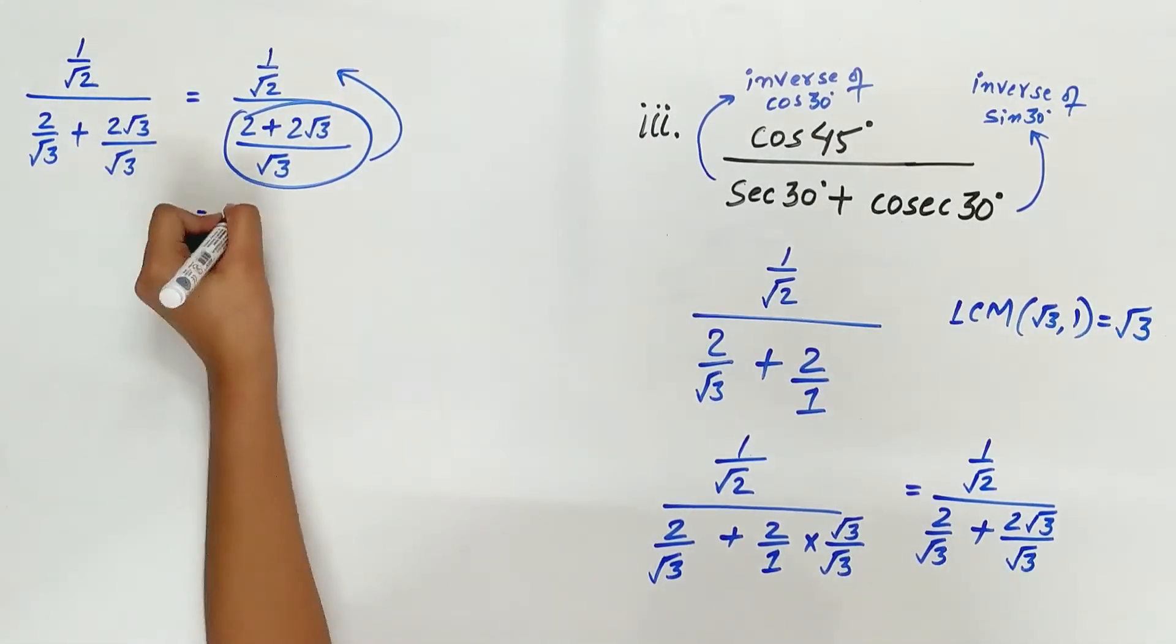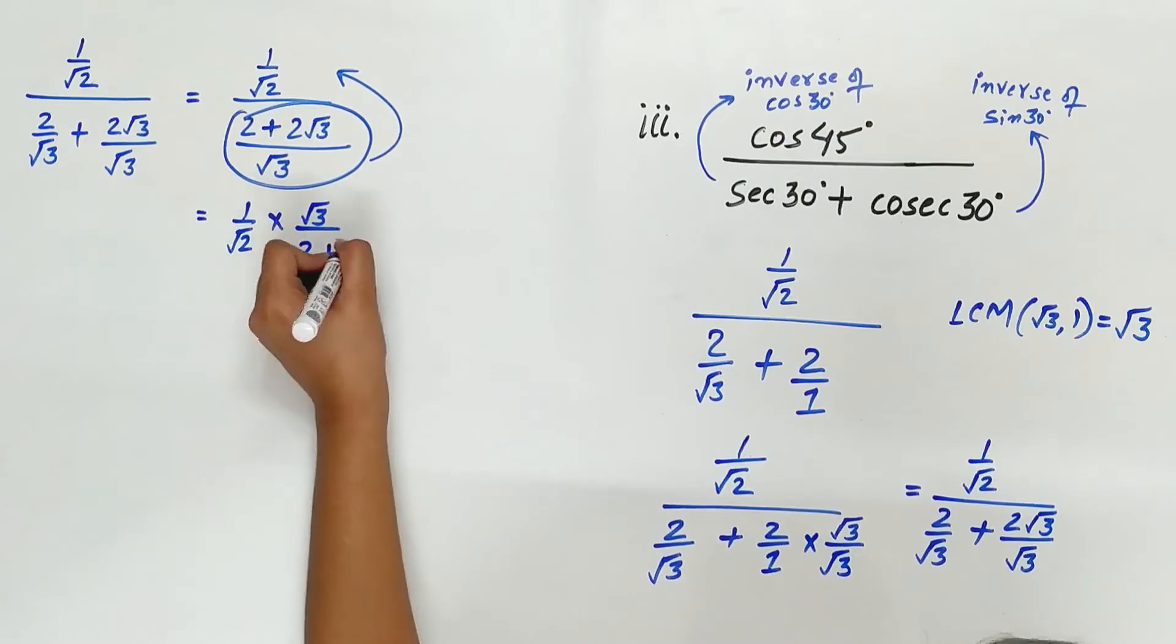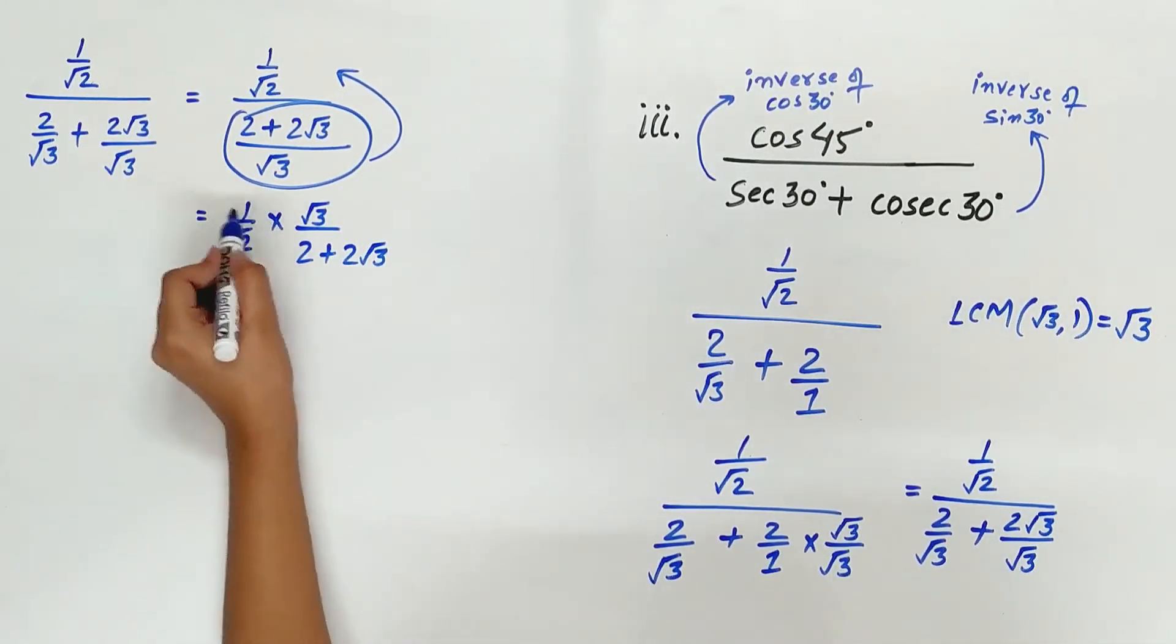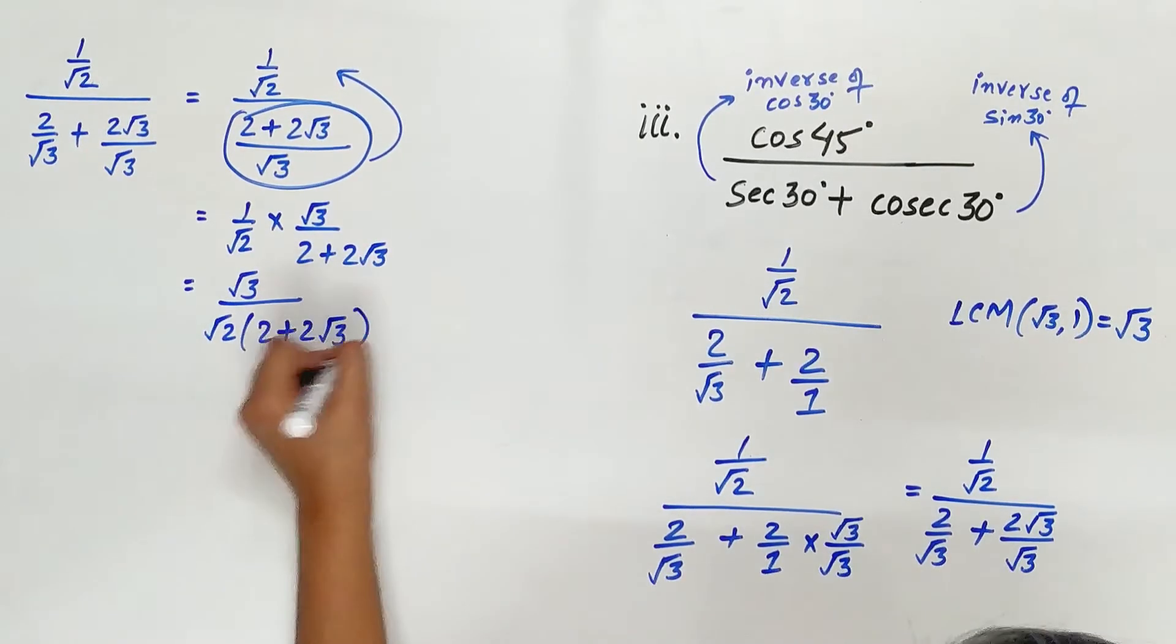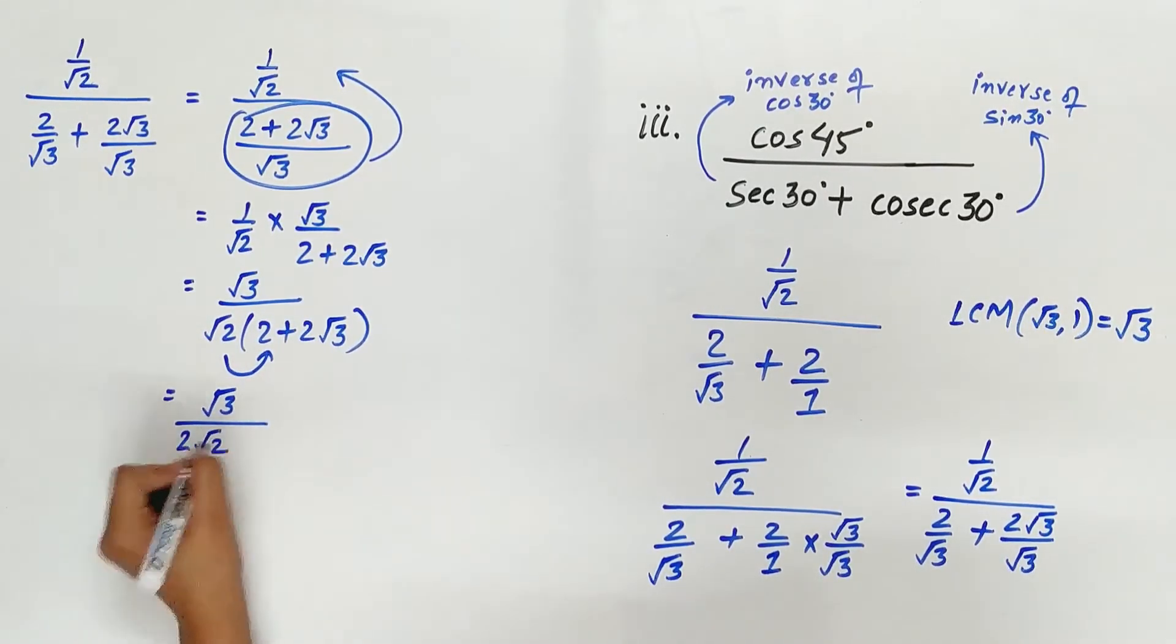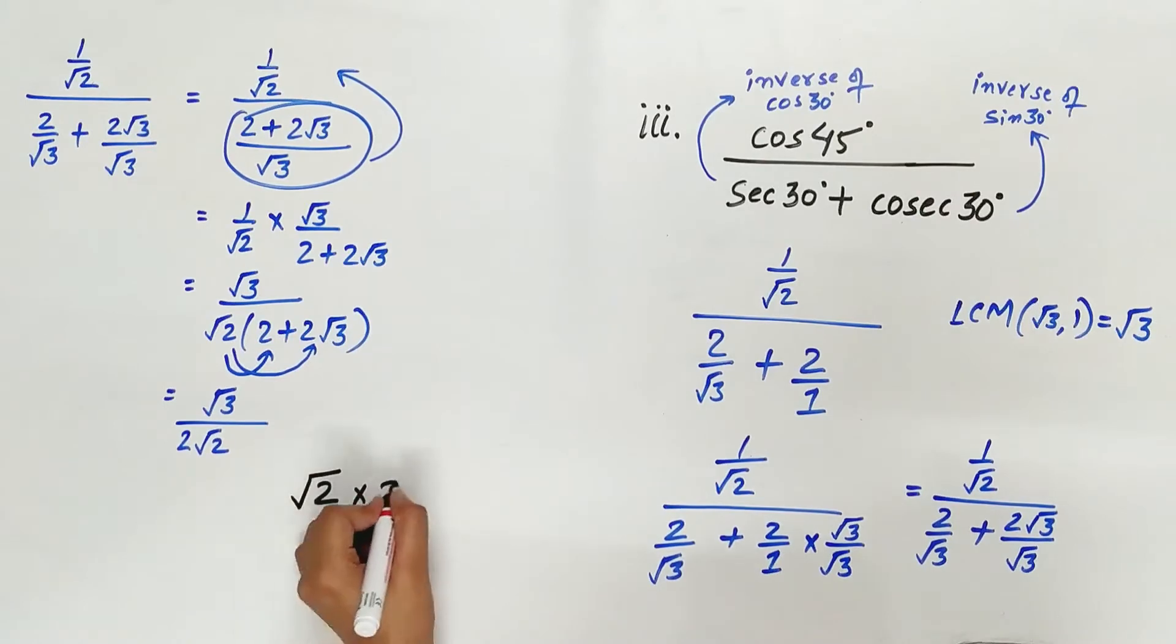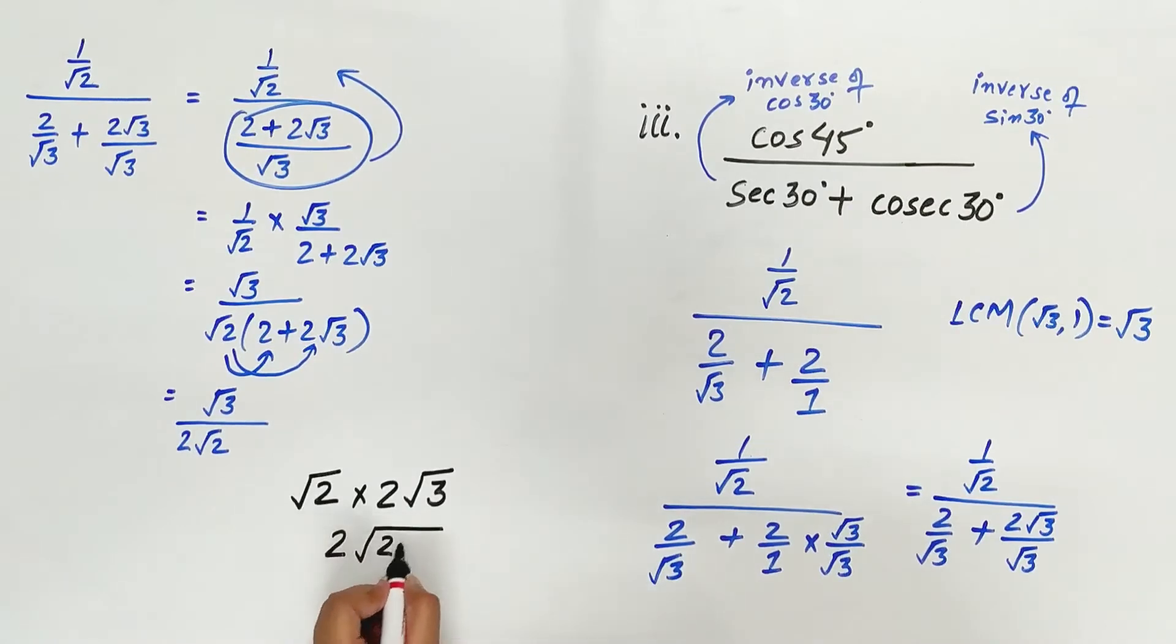Now reciprocal the entire term. 1 by root 2 divided by 2 plus 2 root 3 by root 3 becomes root 3 by root 2 multiplied by 2 plus 2 root 3.